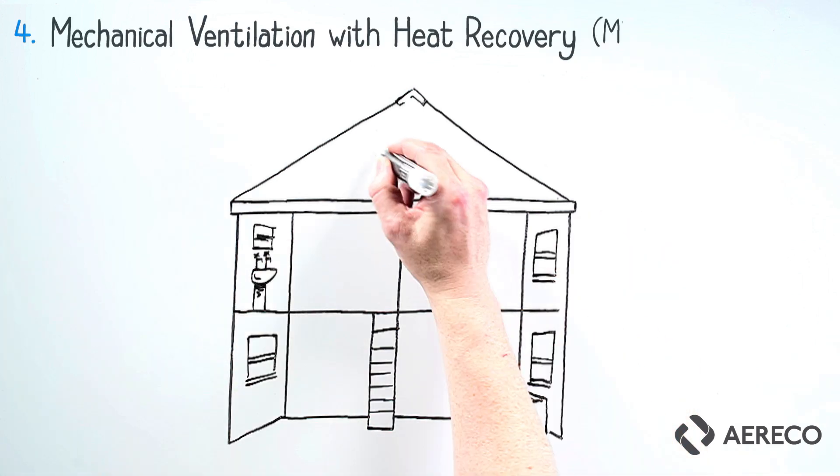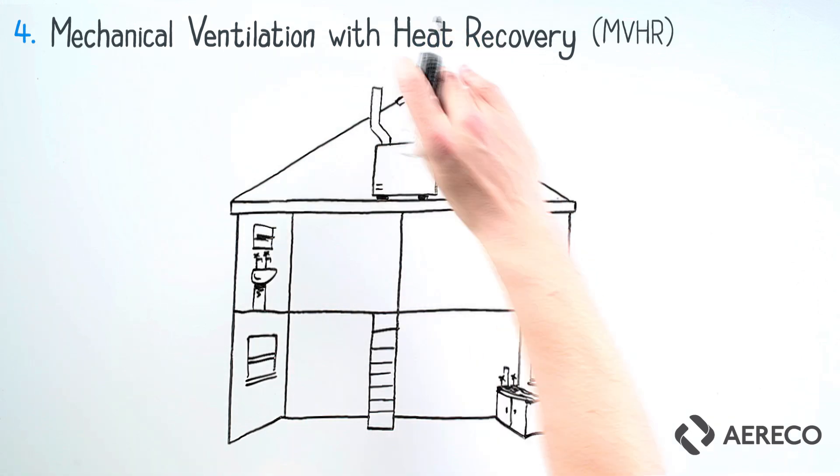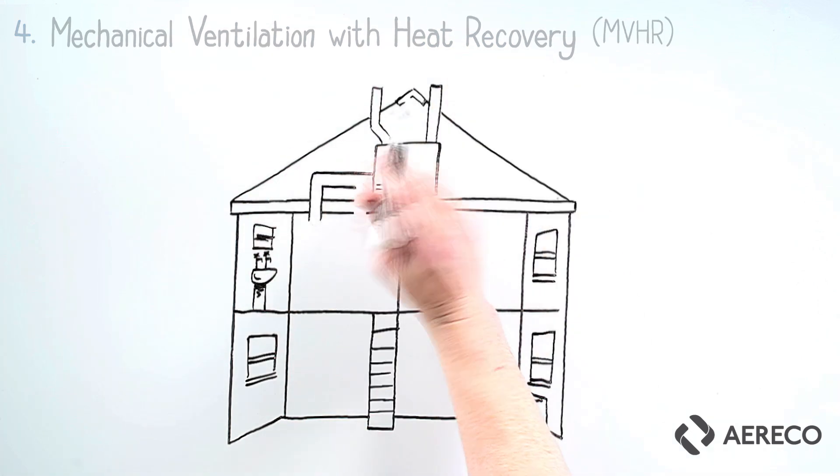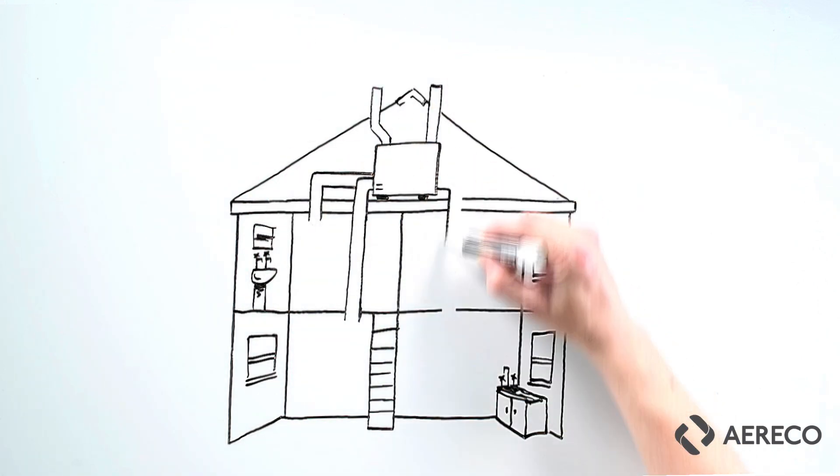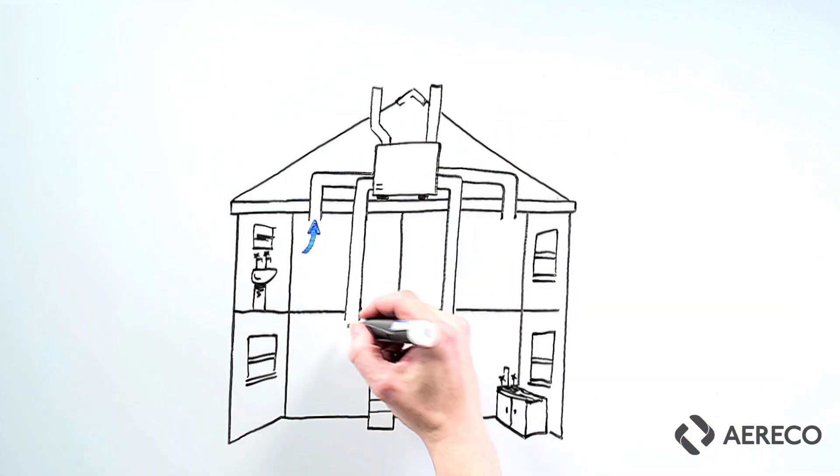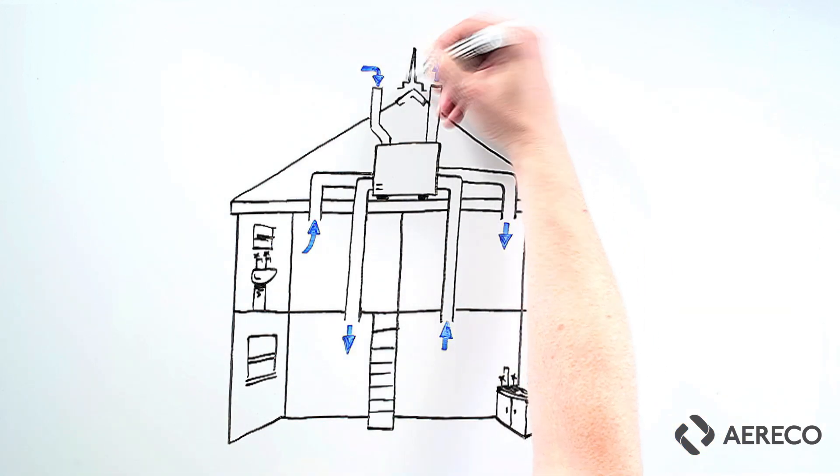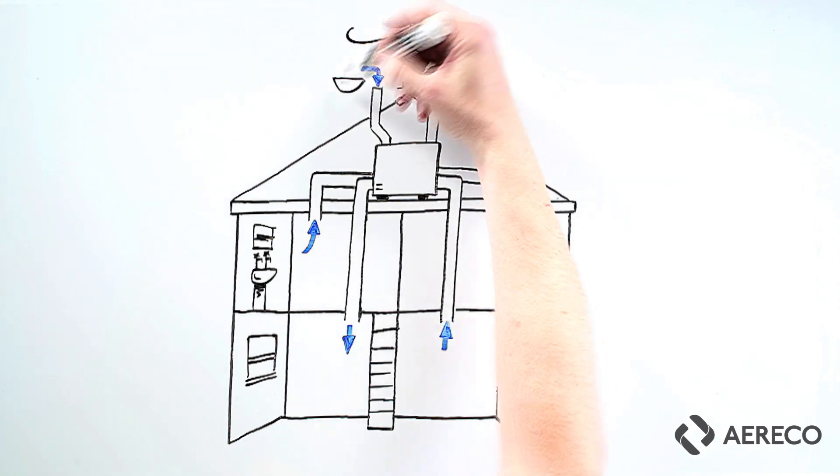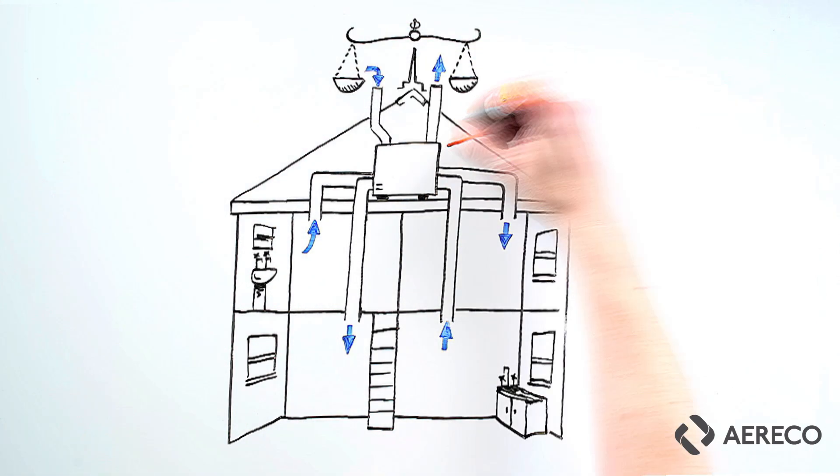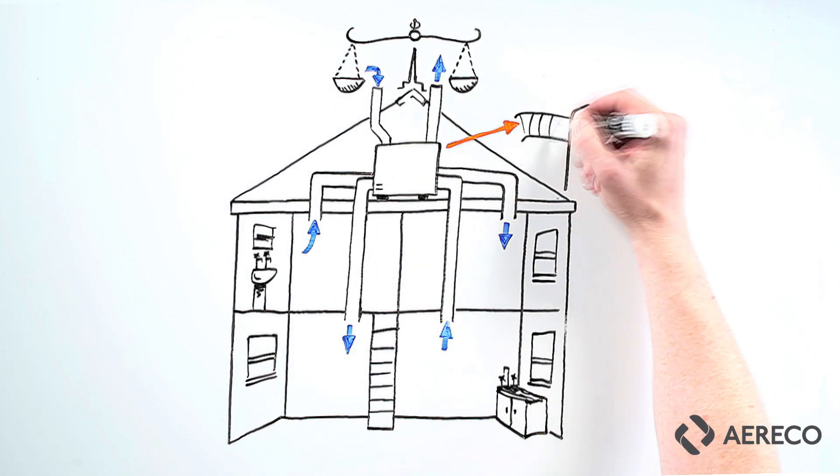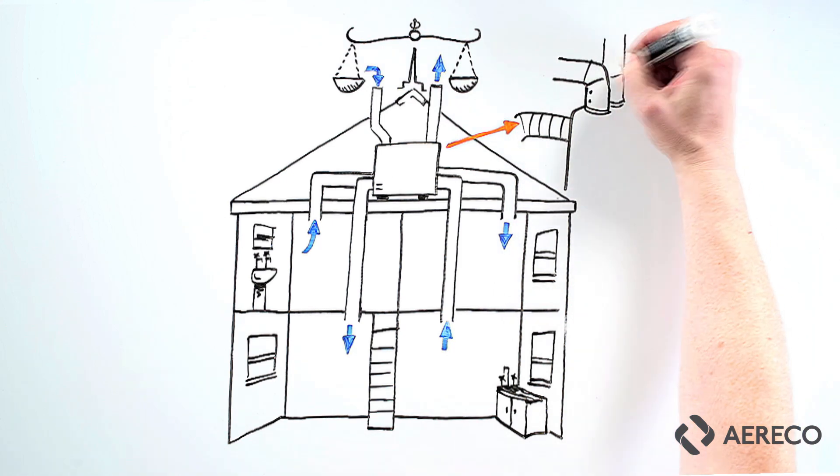Four: mechanical ventilation with heat recovery, or MVHR. An MVHR system is typically a large centralized unit that both extracts from the wet areas and supplies fresh air to the rest of the building via a series of ducts. Because the system is designed to supply as much air as it takes out, it's called a balanced system.